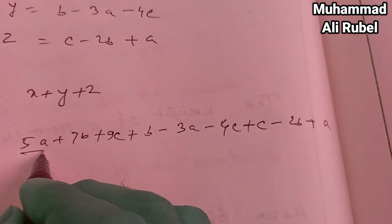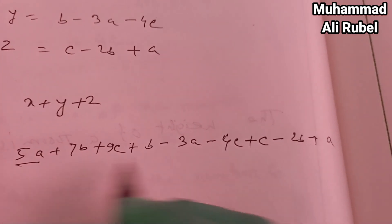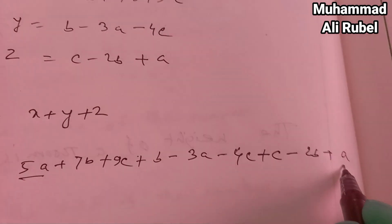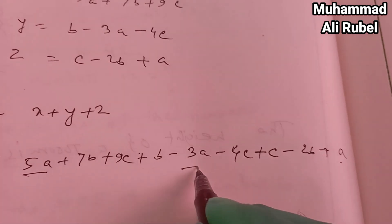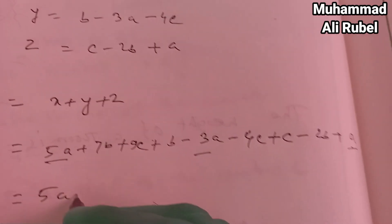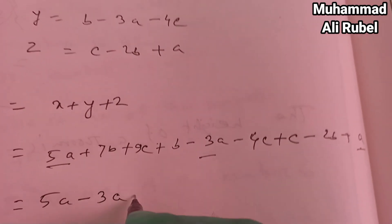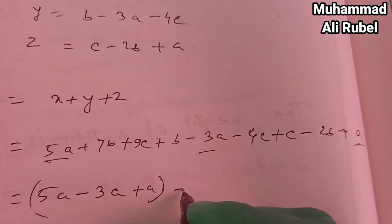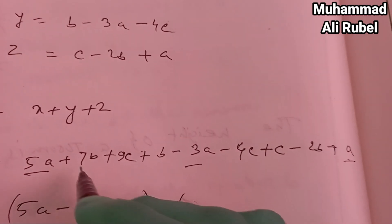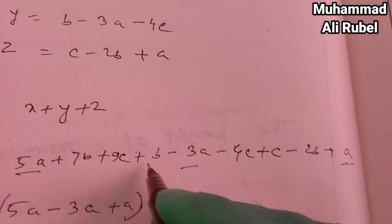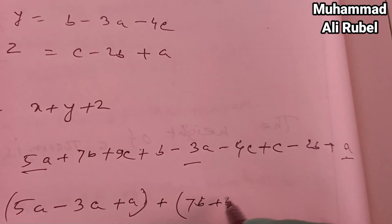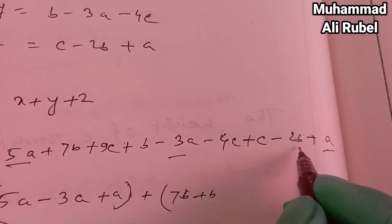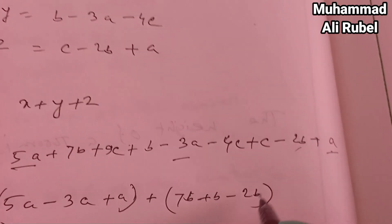Now we're going to add the a terms: 5a minus 3a and a. So 5a minus 3a plus a. Then the b terms, 7b, b, and minus 2b.